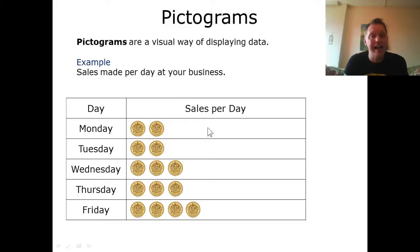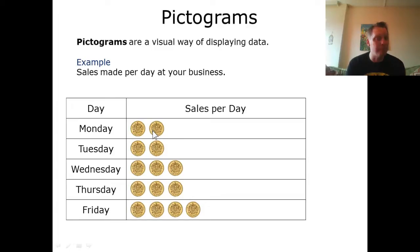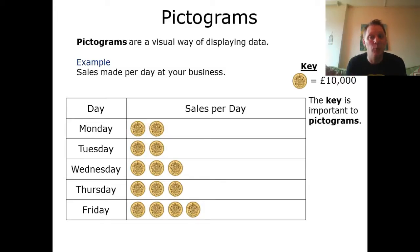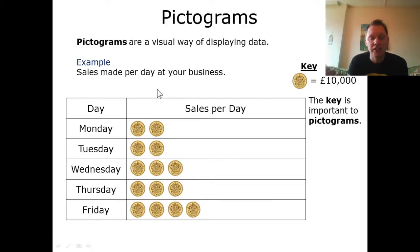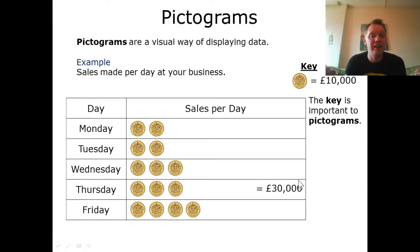We've got days of the week, Monday to Friday, and sales per day done by a business. As you can see, we've got pound coins — these could represent pens, but we don't know what they represent. A key aspect of a pictogram is the key. We need to make sure we have a key to tell us what each symbol represents. Each one of these pound coins represents ten thousand pounds. So looking at Thursday, we've got three of these, meaning this business made thirty thousand pounds worth of sales on Thursday.